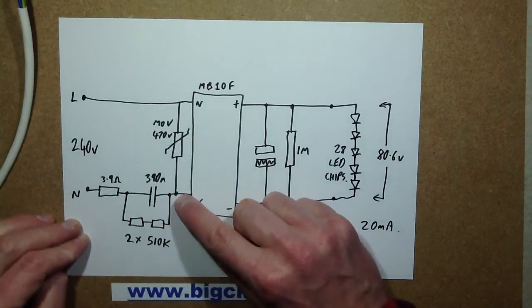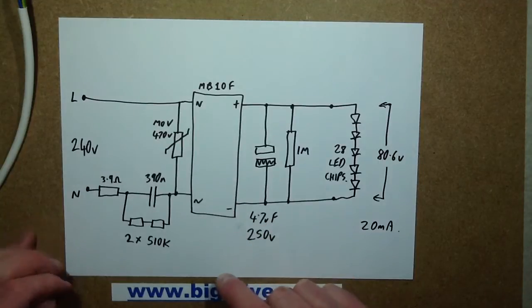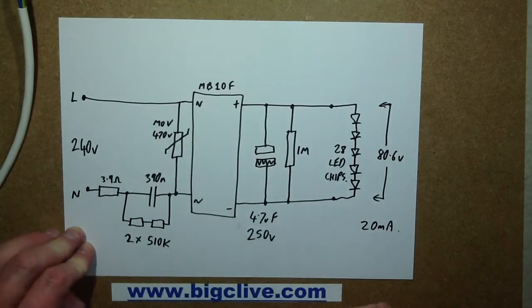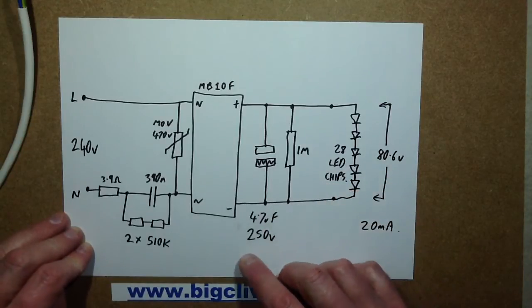Then unusually, after the capacitor, it's got a 470V metal oxide varistor, then an MB10F surface mount bridge rectifier. On the other side of the rectifier, the DC side, there's a 4.7μF 250V capacitor.